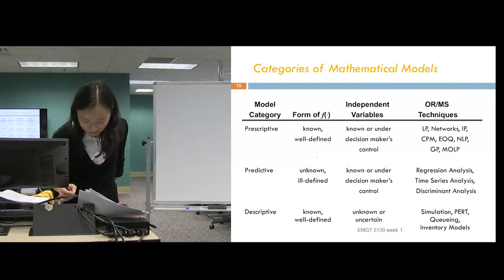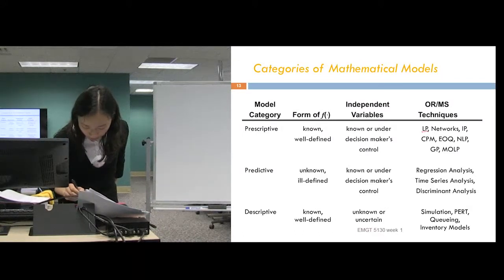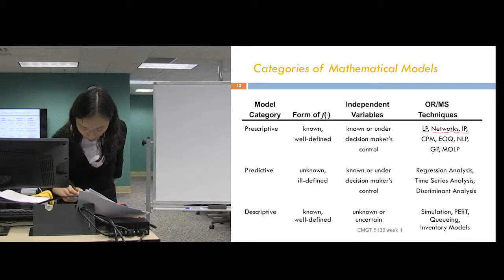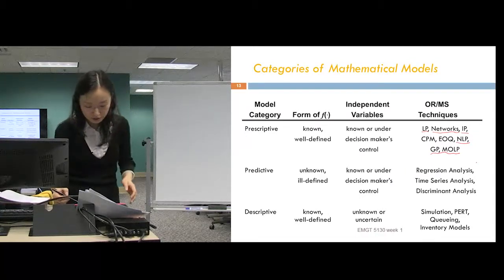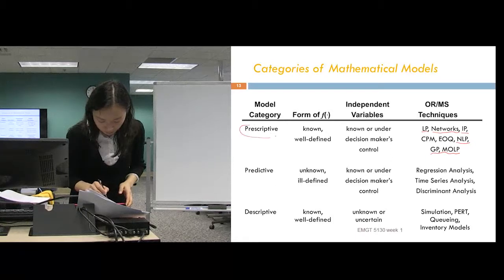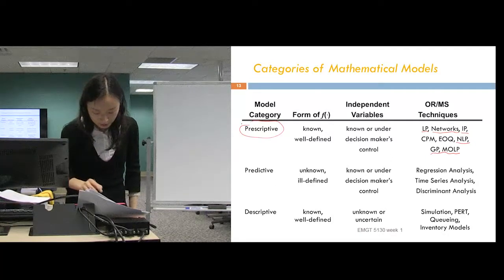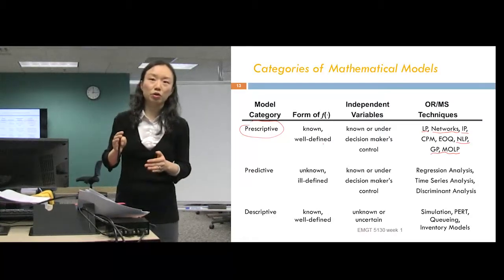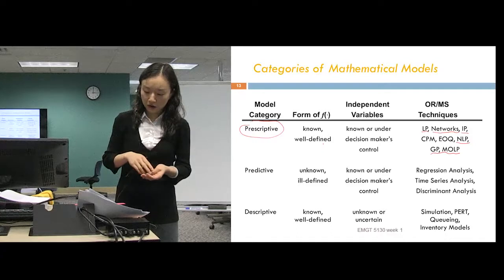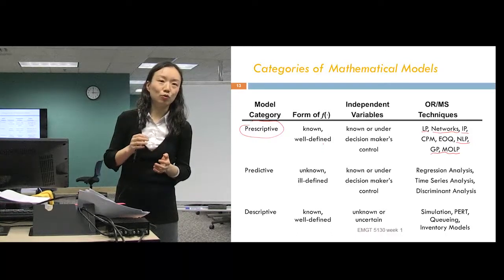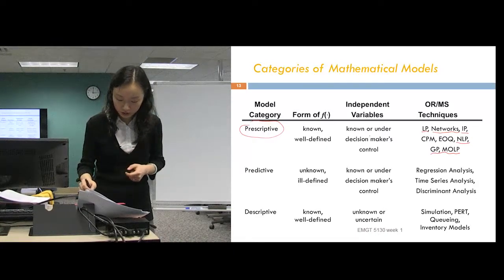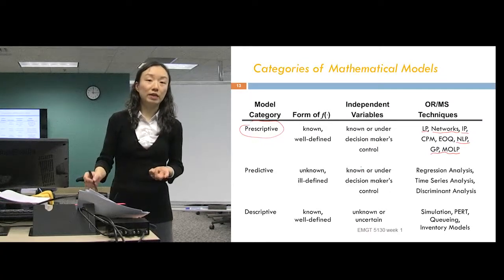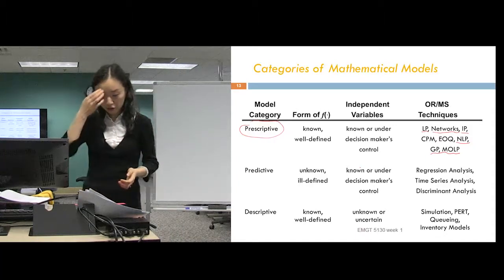And the models, the techniques that we're going to talk about in this class, that's the LP, network, ILP, goal programming, MOLP, NLP. So these are the six OR techniques, all belong to this prescriptive model category, which means that the form of the function, which is the relationship between your independent and dependent variables, they are known, well-defined, which means you can write a closed form function of the relationship. And those independent variables are known or under decision-makers control. They are usually the decision.